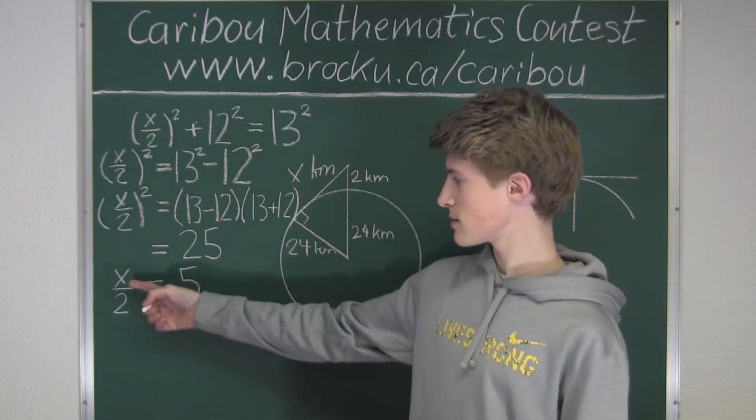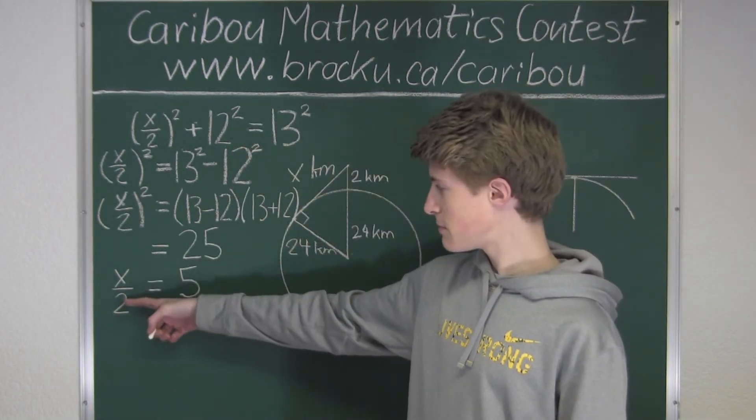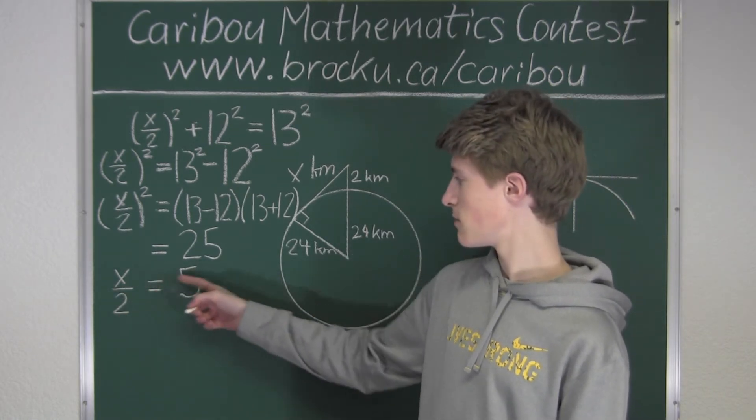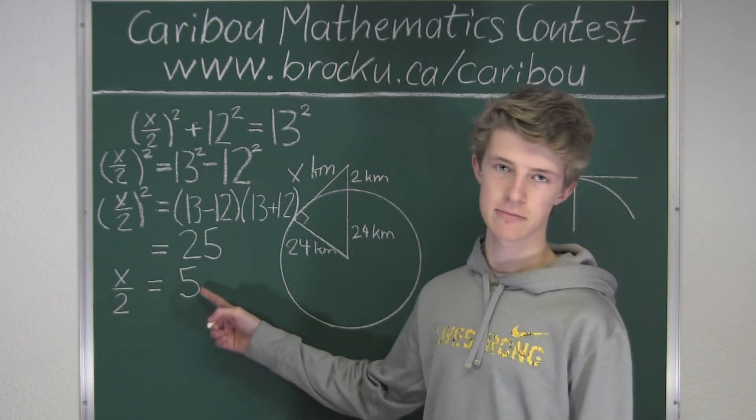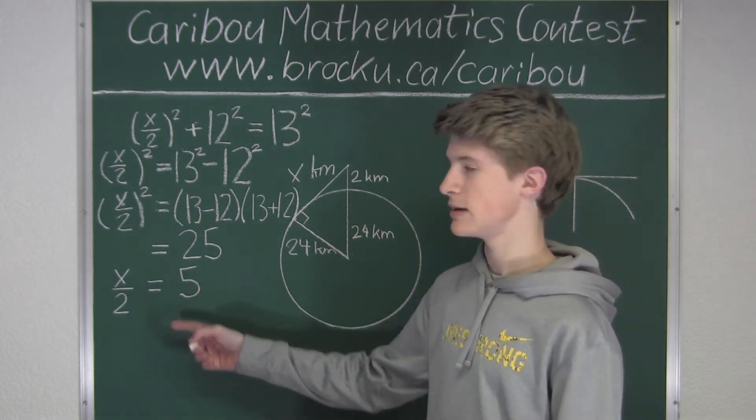So to just get x on the side, since we divide by 2 here, we will have to multiply by 2 on both sides. So 5 times 2 is 10, therefore we know x equals 10.